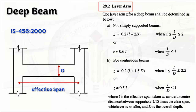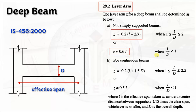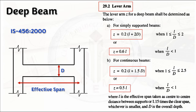Lever arm also plays a major role in calculating the moment of resistance of a beam — the greater the lever arm, the greater the moment of resistance. For a simply supported beam, z equals 0.2 times (l plus 2d), where l/d is greater than 1 and less than 2. Or z equals 0.6l when l/d is less than 1. For a continuous beam, lever arm equals 0.2 times (l plus 1.5d) where l/d is greater than 1 and less than 2.5.